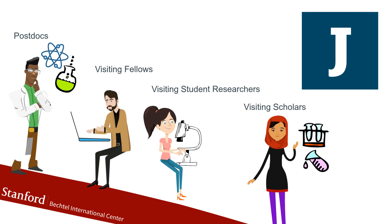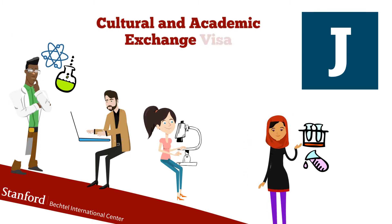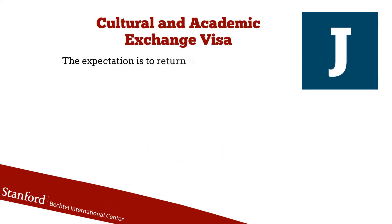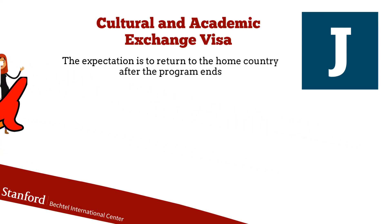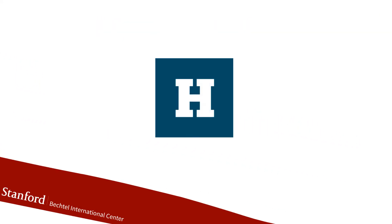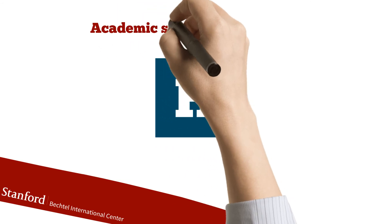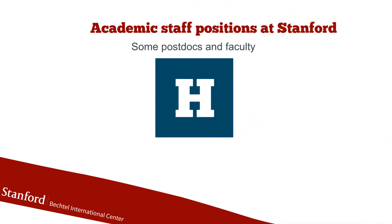The J is appropriate for these visiting affiliations because it is a cultural and academic exchange visa. The expectation is that these internationals will be at Stanford for a defined period of time and then return to their home countries. The H is used for academic staff positions at Stanford and some postdocs and faculty. The H is appropriate for these affiliations because it is based on employment, not cultural and academic exchange.